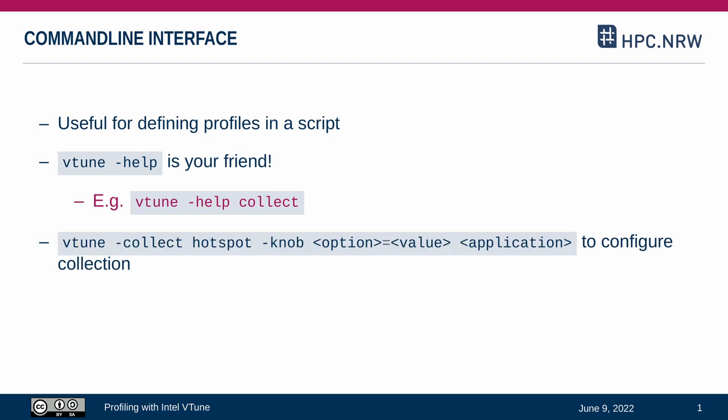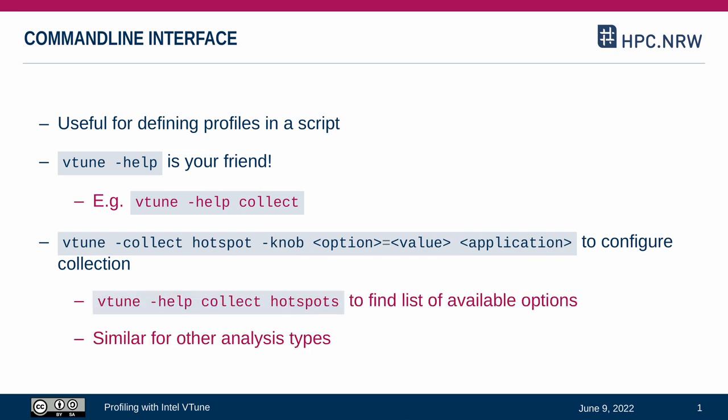It is possible to set special options of analysis types through the "-knob" argument. The help page of Collect Hotspots, for example, prints a list of all available knob arguments for that particular analysis type.